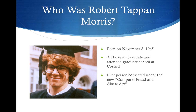So who was Robert Tappan Morris? Was he a criminal mastermind? The answer is no, he wasn't. Robert Tappan Morris was born on November 8, 1965, and computer science was the family business. His father was also a computer scientist who had contributed to early operating software such as Multics and Unix. Ironically, he was employed by the National Security Agency, the NSA.